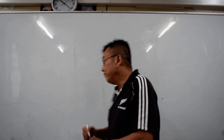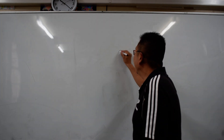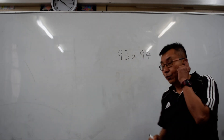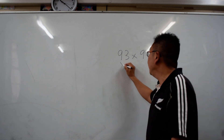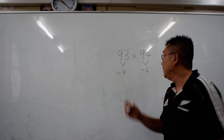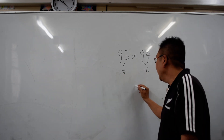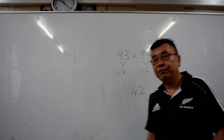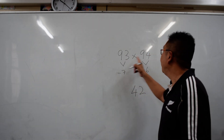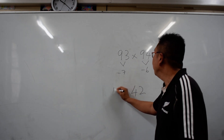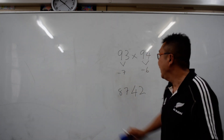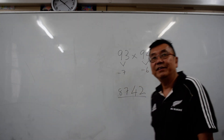The next trick is multiplication of 93 times 94. You find the difference to reach 100: 100 minus 93 is 7, and 100 minus 94 is 6. So the last 2 digits are 7 times 6, which is 42. Then add 93 and 94 to get 187, delete the 1, and the answer is 8742.